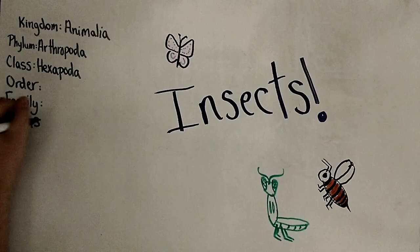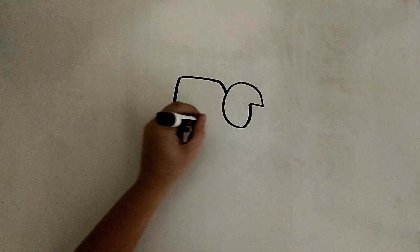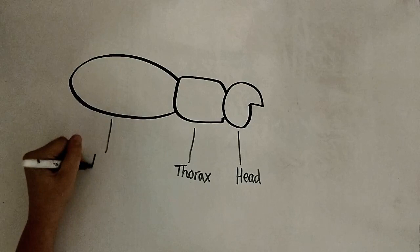These are order, family, genus, and species. It is time to build our insect. We mentioned that all insects have three body parts: a head, a thorax, and an abdomen.